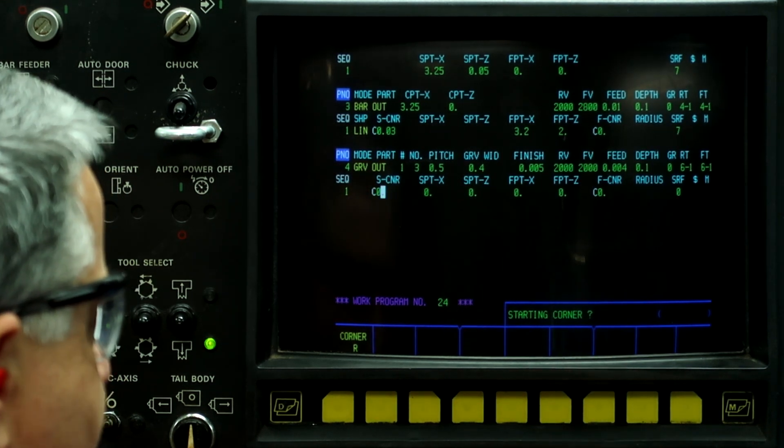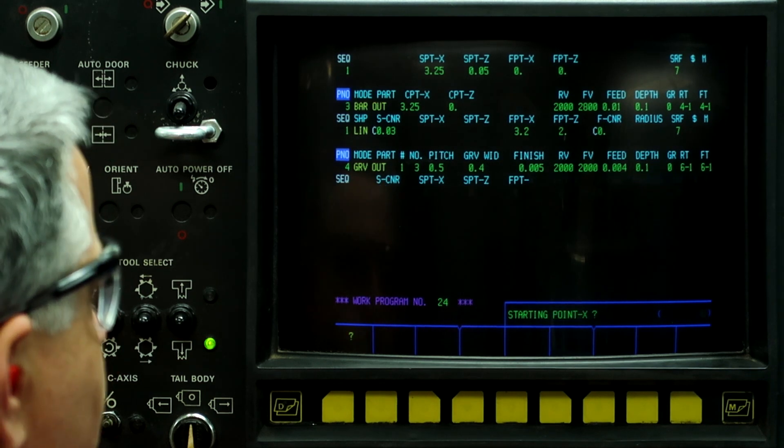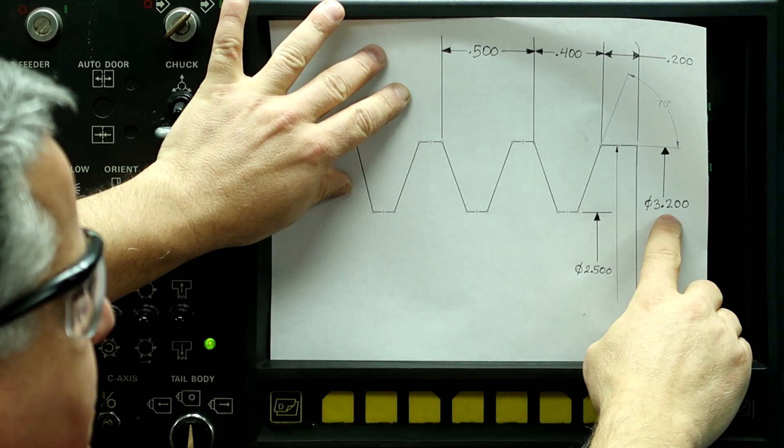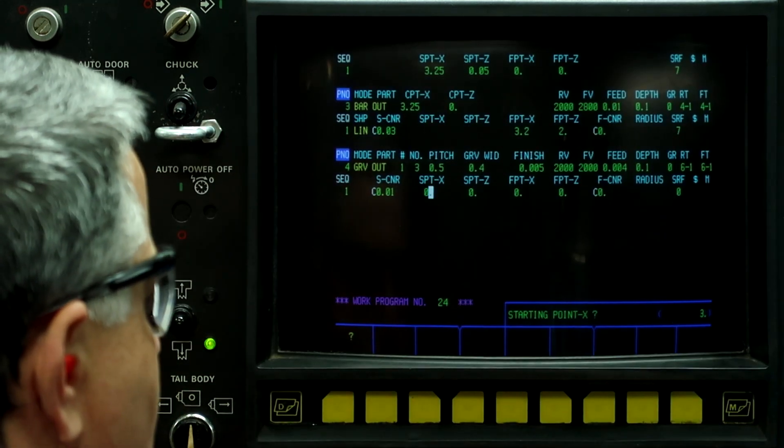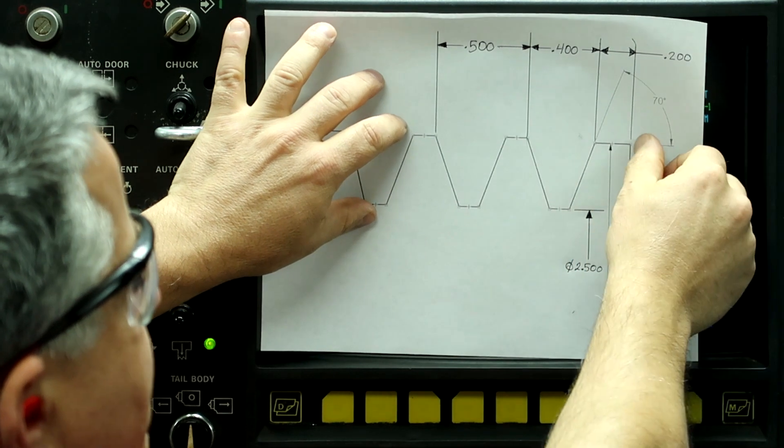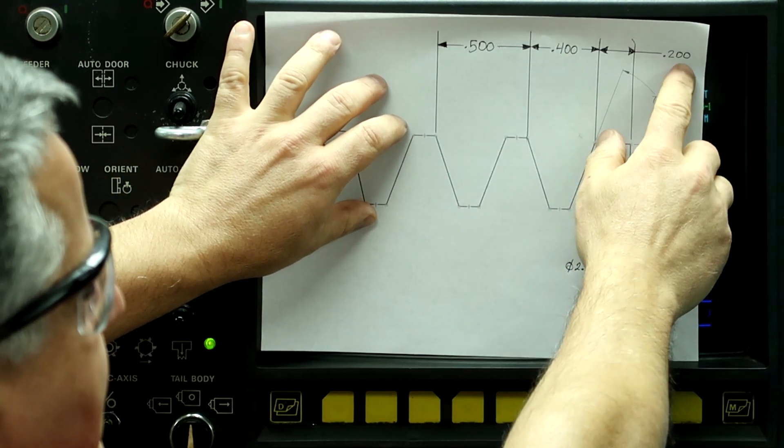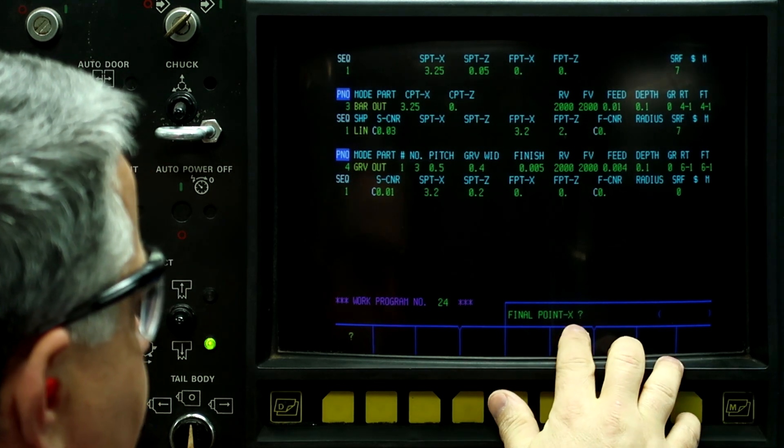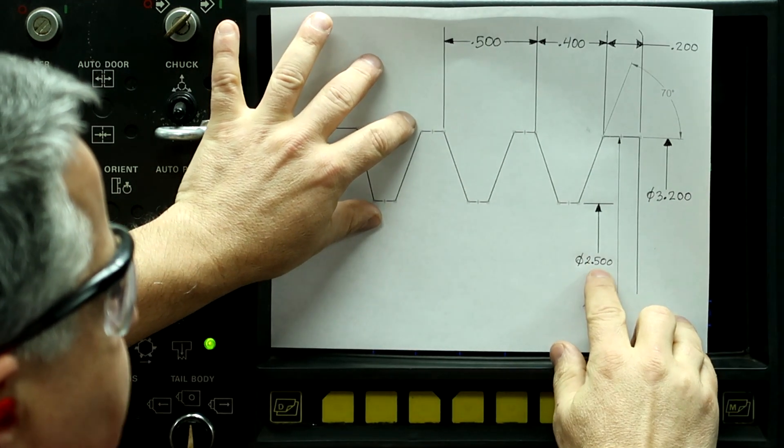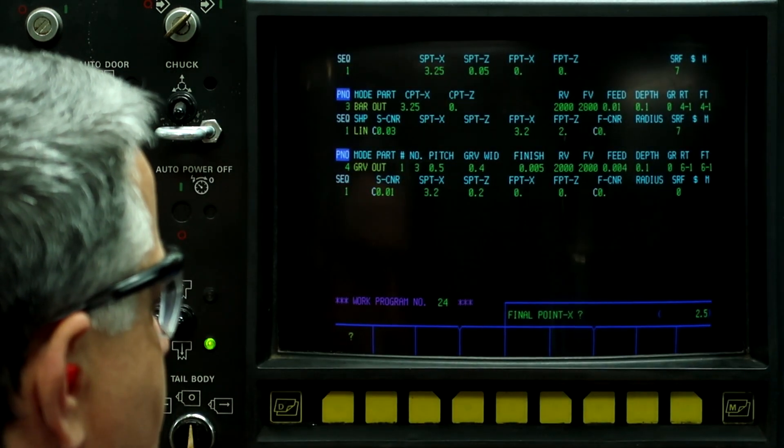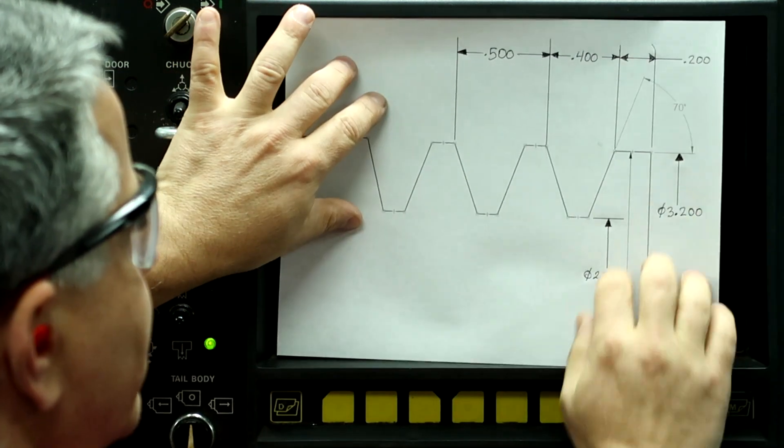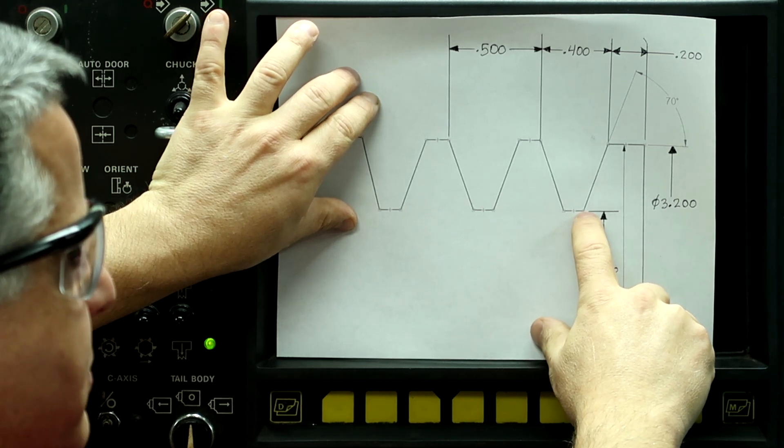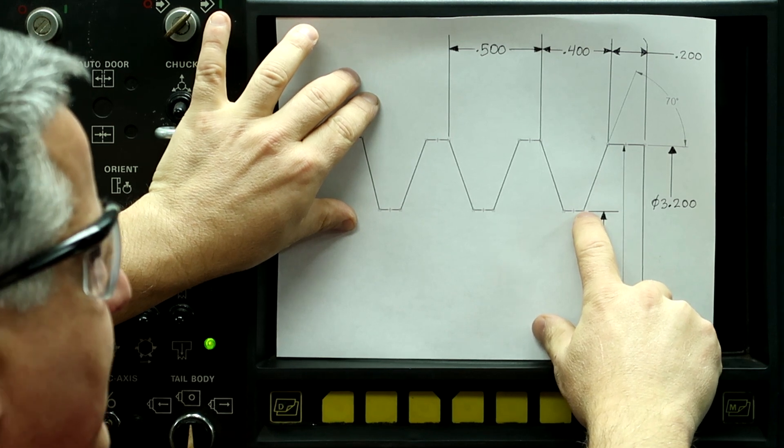Starting corner, I'm going to give it a ten thousandths chamfer. Starting point on X, this is our starting diameter from the previous turning process we just did, it's 3.2 inches. Starting point on Z, it's going to be from the zero face to the front edge of the groove, and it's going to be two hundred thousandths. Final point on X, it's going to be two point five inches, and the final point on Z. Now, if you notice, the final point on Z, this corner down here, is not dimensioned. So what we need to do is do some trigonometry in the machine to get that point.